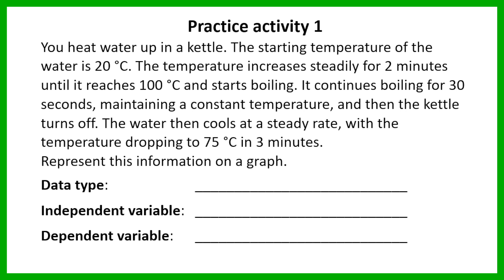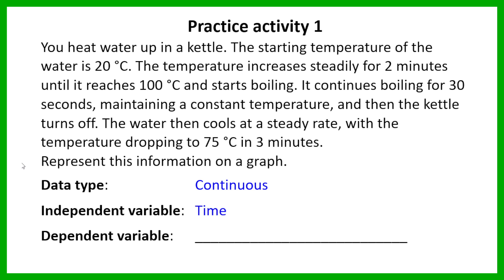Okay, so let's go through those quickly. The data type should be continuous — this is data that we are measuring. The independent variable in this example is the time, and the dependent variable is the temperature of the water. So the time is going to go on the horizontal axis, and the temperature of the water is going to go on the vertical axis.